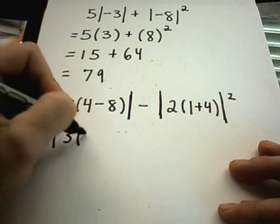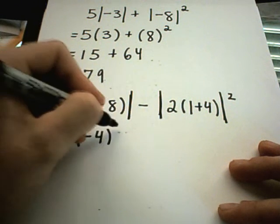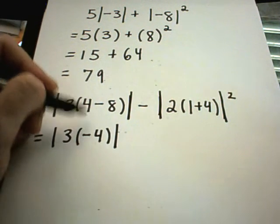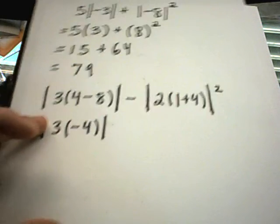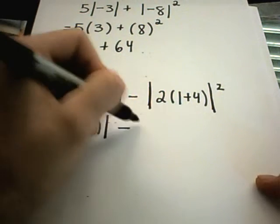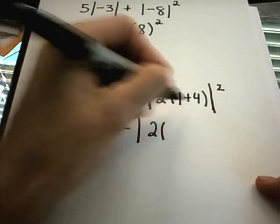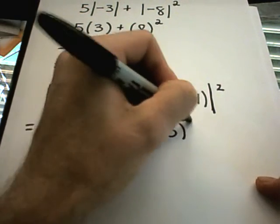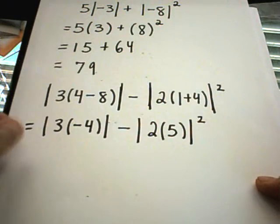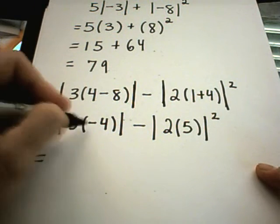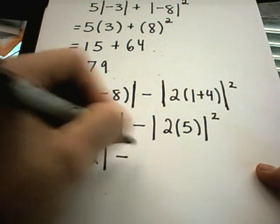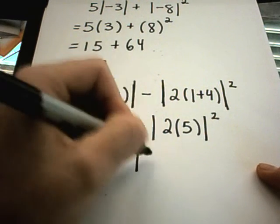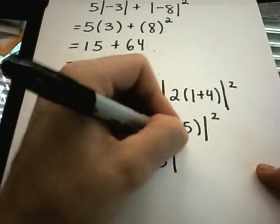So 4 minus 8 is negative 4. Even though it's a negative 4, I'm going to just keep working on the inside. Minus 2 times 1 plus 4 is just 5 squared. So 3 times negative 4, that's negative 12. 2 times 5 is 10 squared.